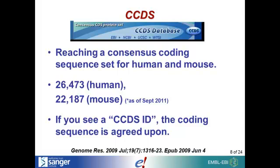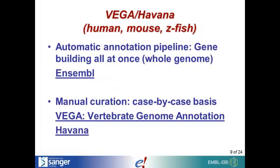CCDS is the consensus coding sequence set — a set of sequences agreed upon between EBI, the Wellcome Trust Sanger Institute, NCBI, and UCSC. The idea is that if you see a CCDS ID for a transcript, you can feel pretty sure about that coding sequence. We've got over 26,000 human coding sequences in the set, and also over 22,000 in mouse.